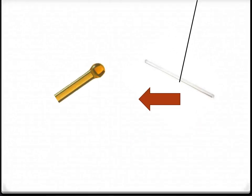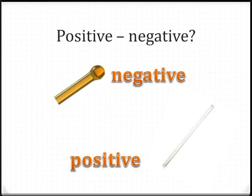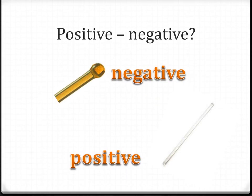If an amber rod was brought near to a dangling glass rod, the glass rod is attracted towards the amber rod. Therefore, the charge on the glass must be different from the charge on the amber.